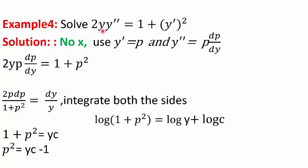In example 4, we are given 2yy'' = 1 + (y')². There is no x term. Let y' = p and y'' = p·dp/dy. Substituting: 2yp·dp/dy = 1 + p². Separating variables: 2p·dp/(1 + p²) = dy/y. Taking 1 + p² = t so 2p·dp = dt, and integrating, we get log(1 + p²) = log y + log c = log(yc).